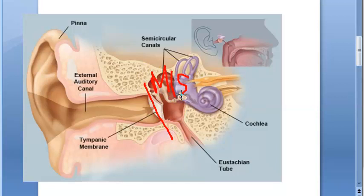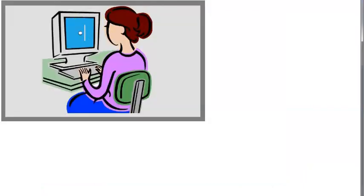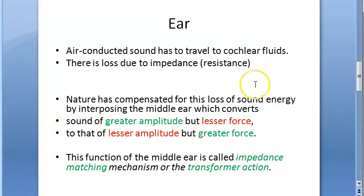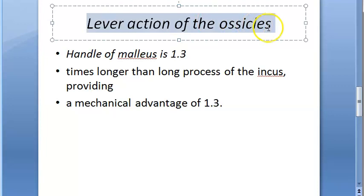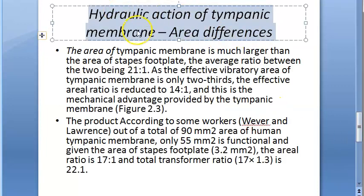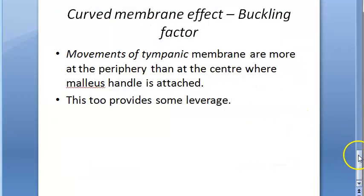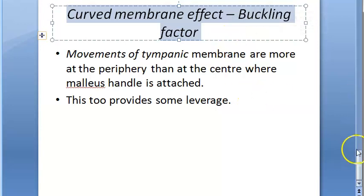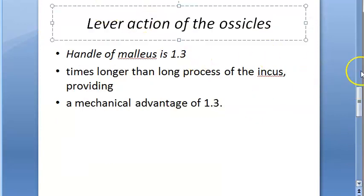To compensate for this 30 dB loss, there is impedance matching done by the tympanic membrane and the ear ossicles — that is the malleus, incus, and stapes. This is one of the functions of the ossicles and tympanic membrane. There are three things involved: lever action of the ossicles, area difference of the tympanic membrane, and the curved membrane effect.